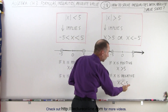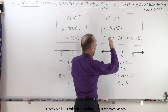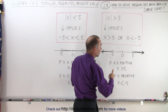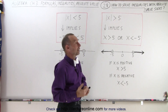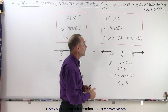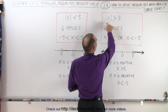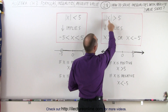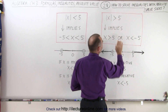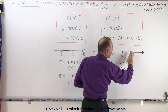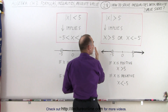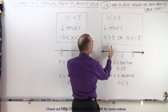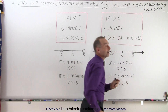For example, if x is negative 6 or negative 7, you take the absolute value of that and you get positive 6 or positive 7, which is bigger than 5, and so it satisfies the inequality. In other words, if the absolute value of x is greater than 5, then x must be greater than 5 or x must be smaller than negative 5, because any of these numbers, when we take the absolute value of them, will be greater than 5.